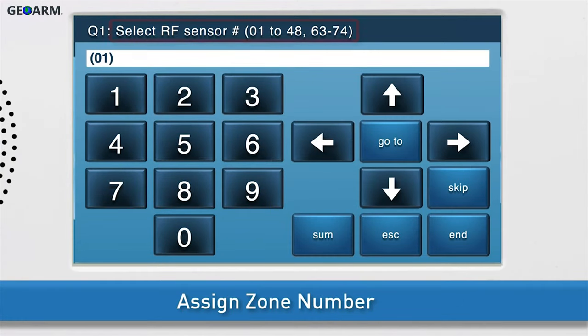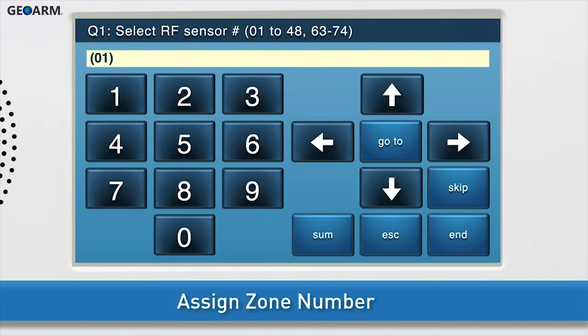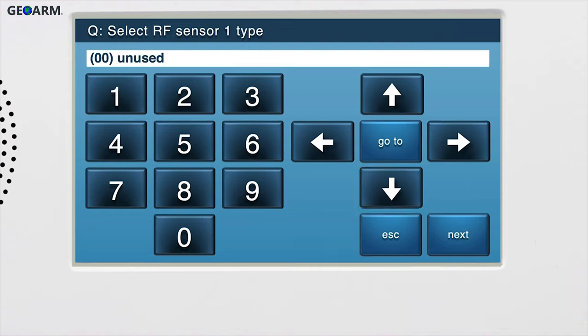By default, we're already on the correct sub-question to select the zone number. The white field is called the answer box. 01 will display in the answer box by default, which means we've selected zone number 1. If you would like to change the zone number, press the right arrow to scroll through other options, or type the desired number in using the number keys on screen. You will see the new selection appear in the answer box. Once the desired zone number displays in the answer box, press the down arrow to go to the next sub-question.